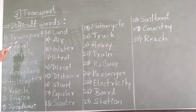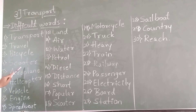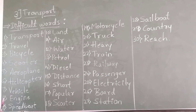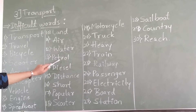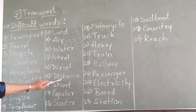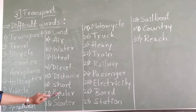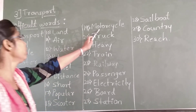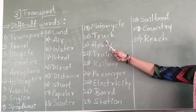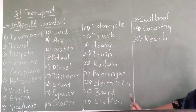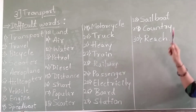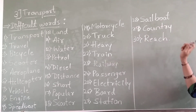The vocabulary words for this lesson are: transport, travel, bicycle, scooter, aeroplane, helicopter, vehicle, engine, speedboat, land, air, water, petrol, design, distance, short, popular, scooter, motorcycle, truck, heavy, train, railway, passenger, electricity, boat, station, sailboat, country, reach.